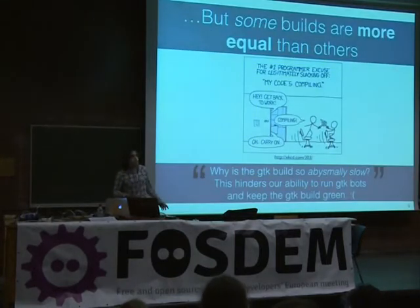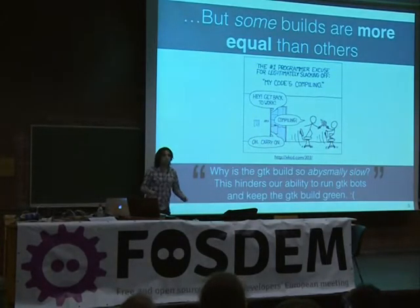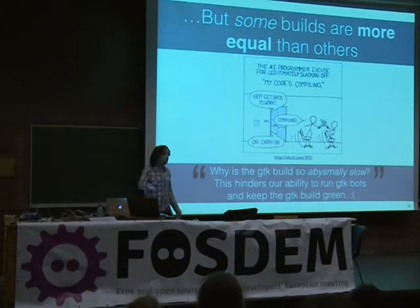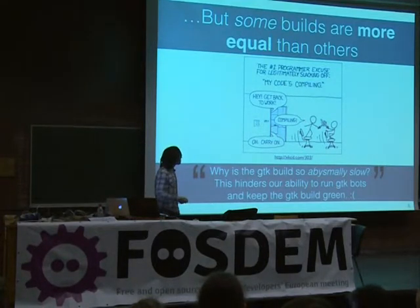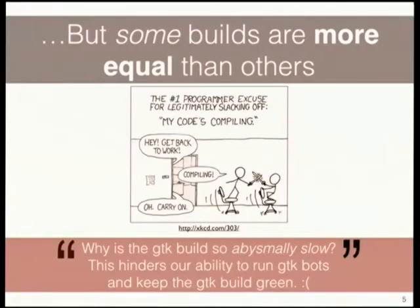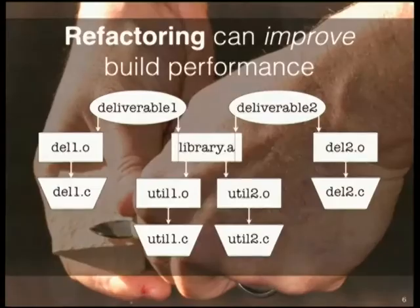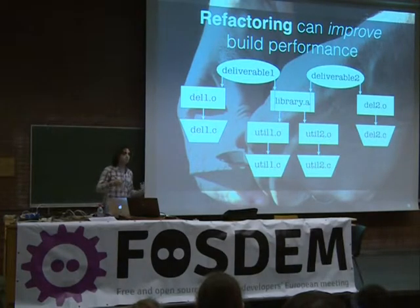But in reality, some builds are more equal than others. Some builds cost more, take longer than other ones. A recent XKCD comic kind of highlights that, saying that slow builds or compilations are the number one reason for developers slacking off. And some recent discussions on the GTK mailing list suggest that their build is so slow that it's actually impacting the way that they get their work done. So now that we know that build performance can actually impact developers, what can we do about it?